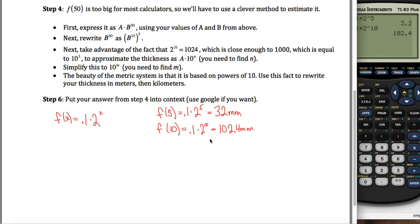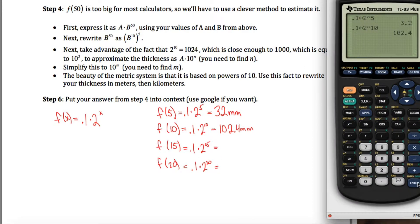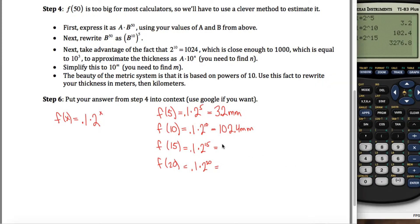And similarly, I want f of 15 and f of 20. So those would be 0.1 times 2 to the 15th and 0.1 times 2 to the 20th, respectively. And to calculate those, I'll do that same trick, second enter to pull up the last line, and then I'll edit it, change the 10 to a 15, and I get 3,276.8 millimeters.